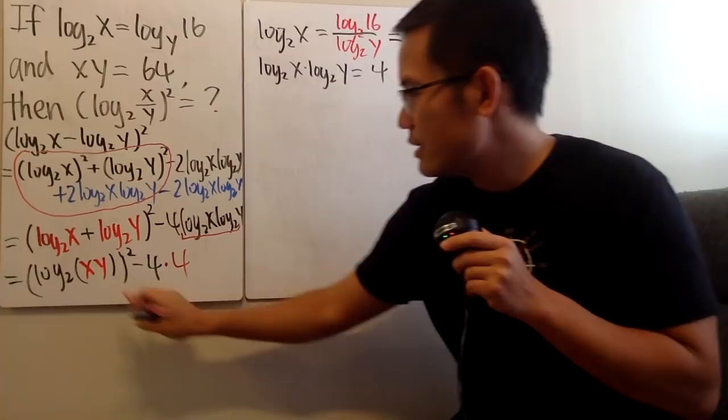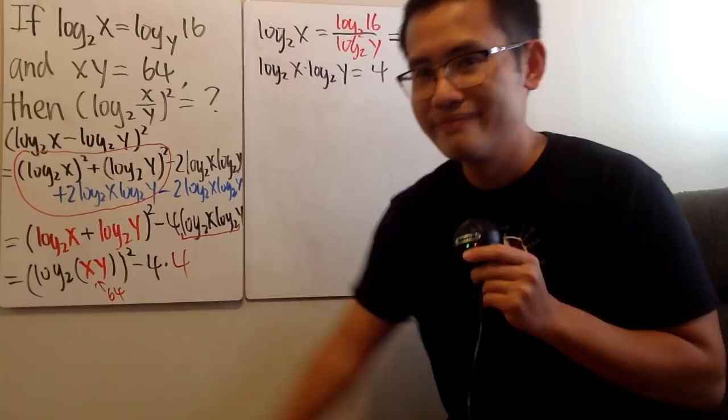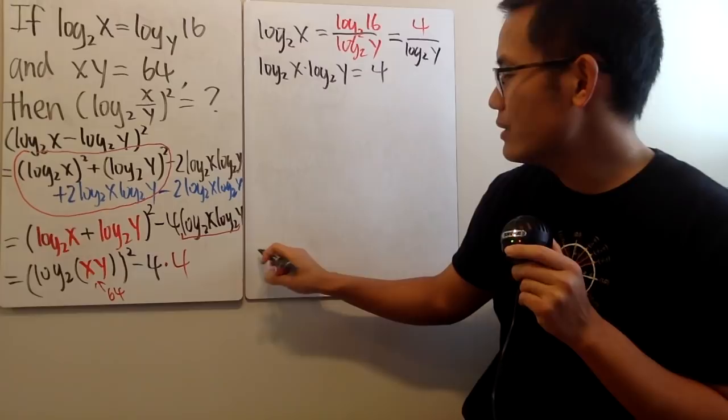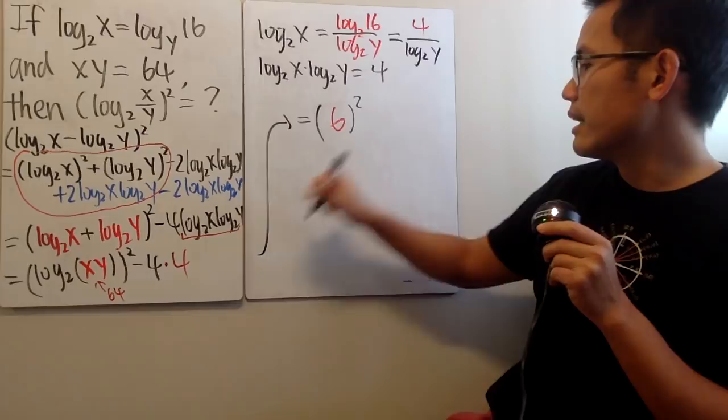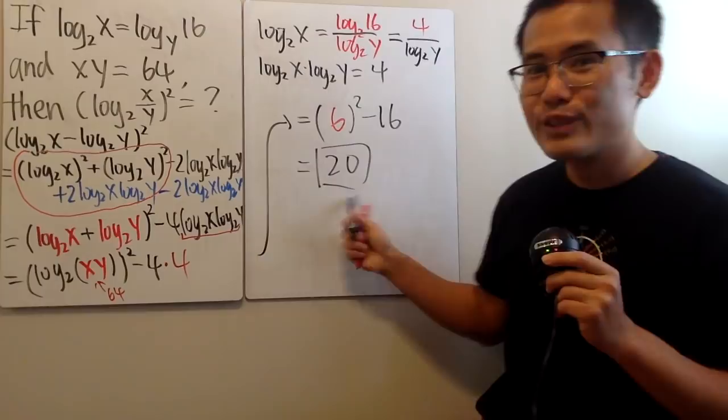Do we know what xy is? Yes, we totally do — we know this is equal to 64 inside log base 2. So 64 is 2 to what power? 6th power. So we can see that log base 2 of 64 equals 6. Then square that, and then minus 16. All in all, we end up with 20.